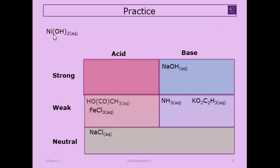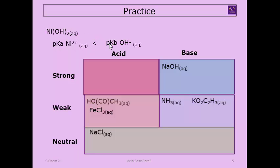Nickel hydroxide: nickel fits the category of weakly acidic, but it's paired with a base. When you have both a weakly acidic and a weakly basic component, you compare the pKa values. Compare the pKa of the nickel aqueous ion to the pKb of the hydroxide. Since the hydroxide is very strongly basic, that overrides the nickel. You could qualitatively see this, but otherwise you'd need numbers. Alternatively, since this is an insoluble hydroxide, it's a weak base.